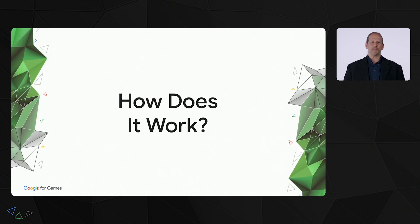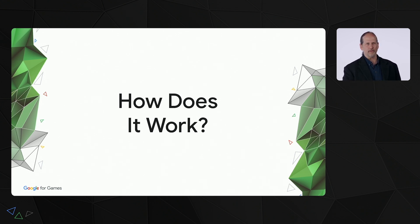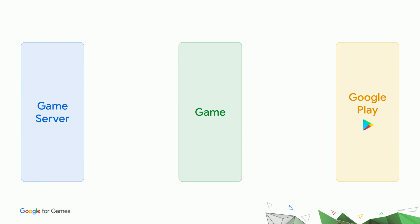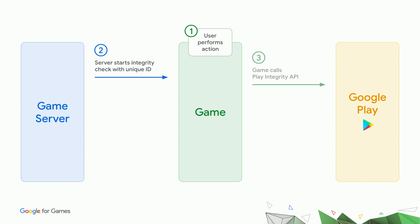So how does it work? The API allows your app server to communicate through your app to Google Play servers to determine trust in a way that can't be interfered with. First, the user tries to do something like join a multiplayer game. At this moment, your back-end server starts an integrity check with a unique ID. Then your game makes a call to the Play Integrity API. Google Play has a lot of different signals to assess whether the device has been compromised and whether it has passed the certification tests. Play also verifies the license, which means that the user has downloaded the game from Play.